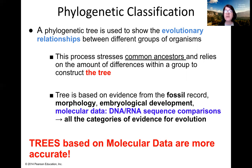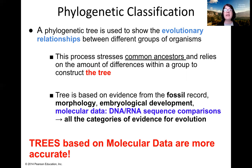Phylogenetic trees, because they are used to show evolutionary relationship, need to rely on multiple pieces of evidence. And I'll say it several more times: phylogenetic trees are just hypotheses — they're models — so they're constantly being revised as new evidence comes in.